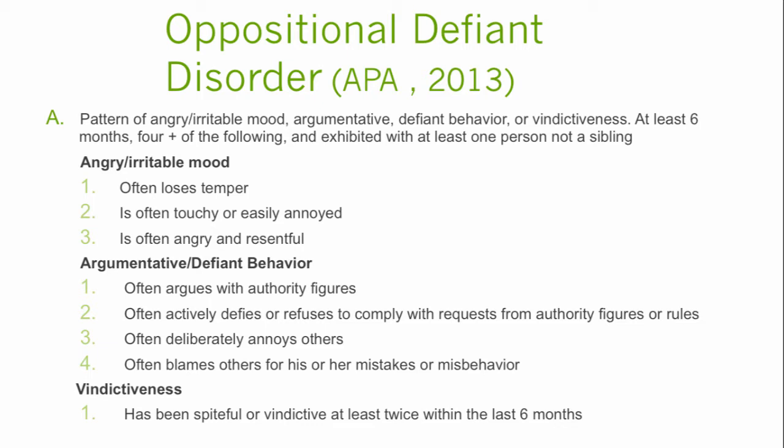The first child certainly looks like at least four of the following: losing temper, touchy, easily annoyed, angry, resentful, arguing with authority figures, actively defies or refuses to comply with requests. It's unclear about the remaining ones.